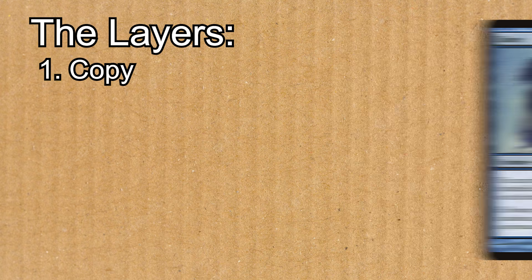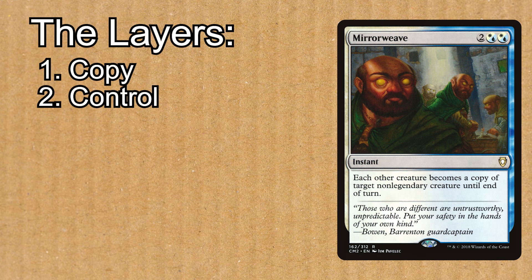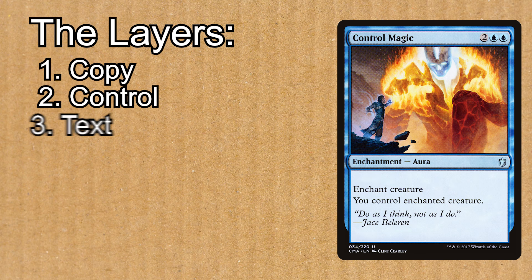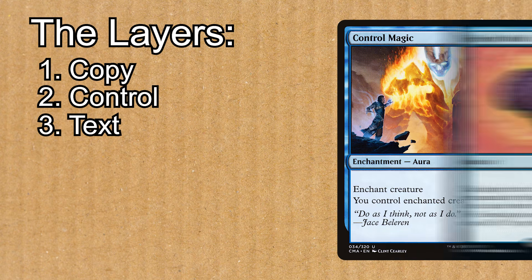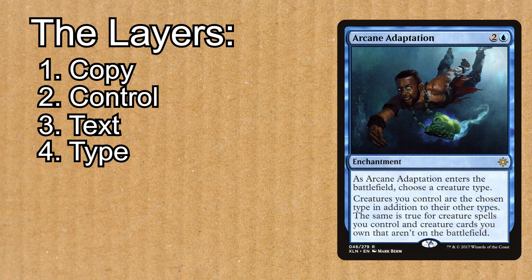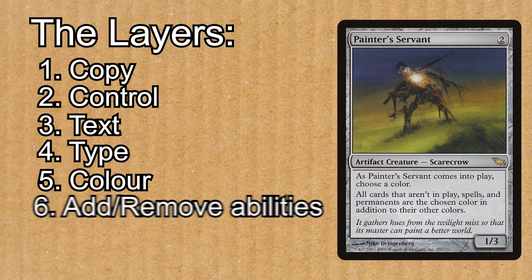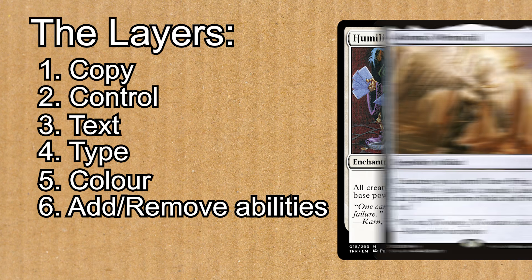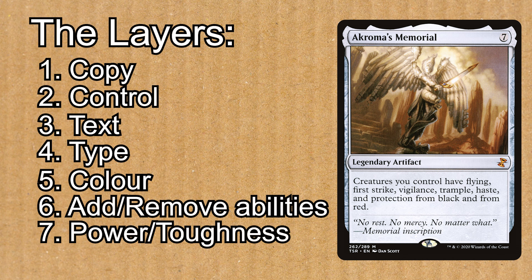In Magic, there are seven layers. In Layer 1, we have copy effects like Clone or Mirror Weave. In Layer 2, there's control-changing effects like Agent of Treachery or Control Magic. In Layer 3, we have text-changing effects like Sleight of Mind or something like the Overload mechanic. Layer 4 covers type-changing effects like Blood Moon or Arcane Adaptation. In Layer 5, we have color-changing effects like Painter's Servant. In Layer 6, we have effects that add or remove abilities like Humility or Akroma's Memorial. And in the final layer, Layer 7, we have power and/or toughness-changing effects.